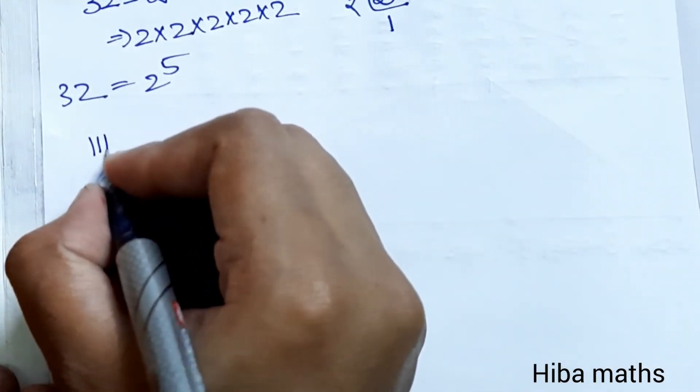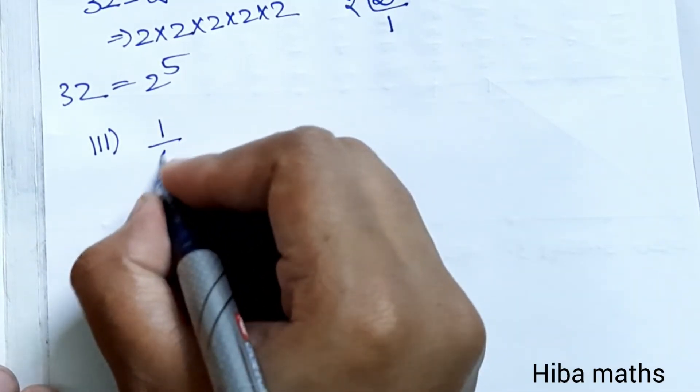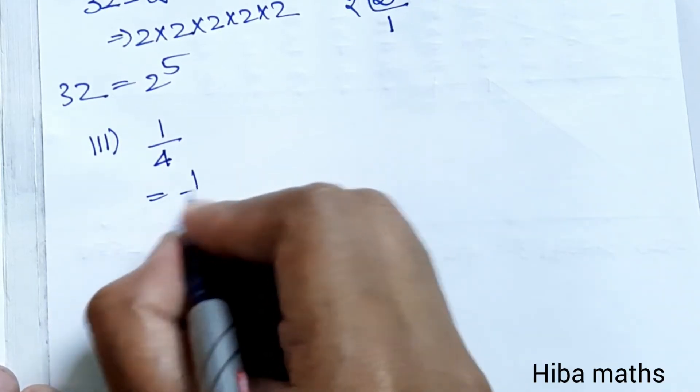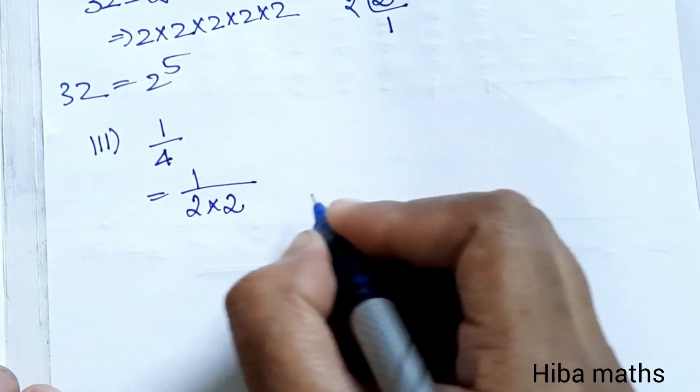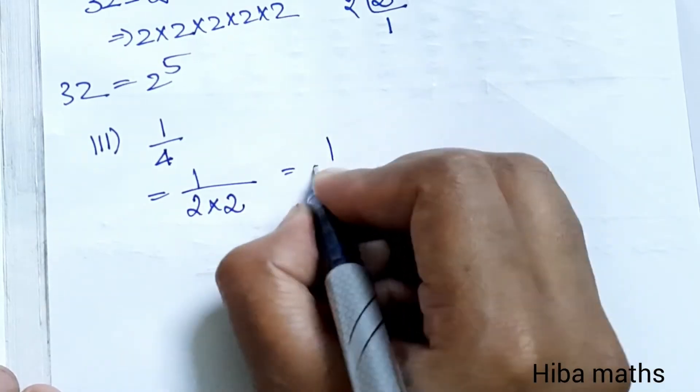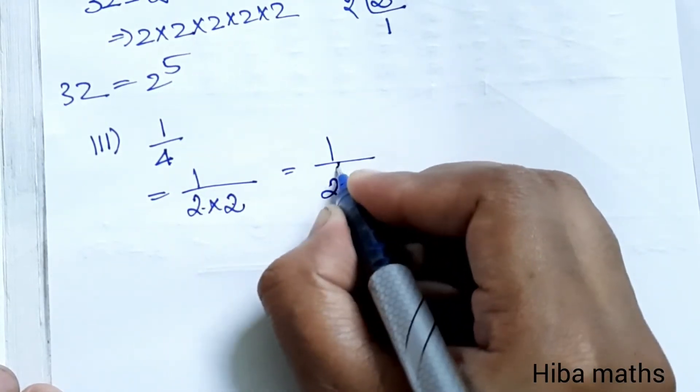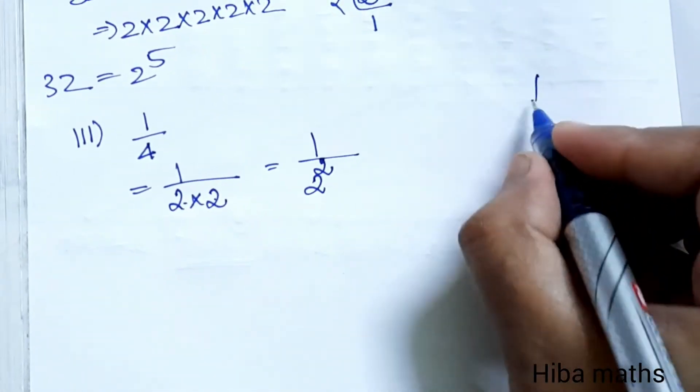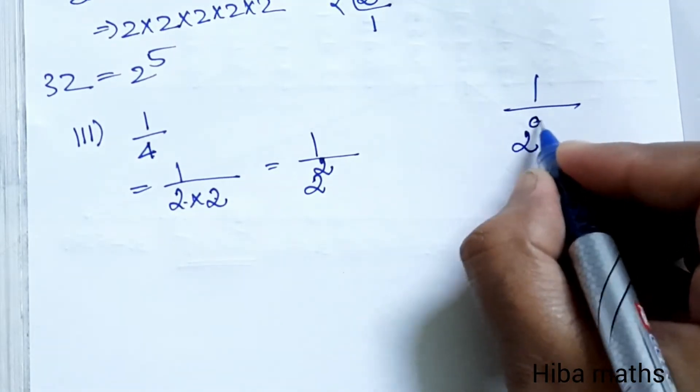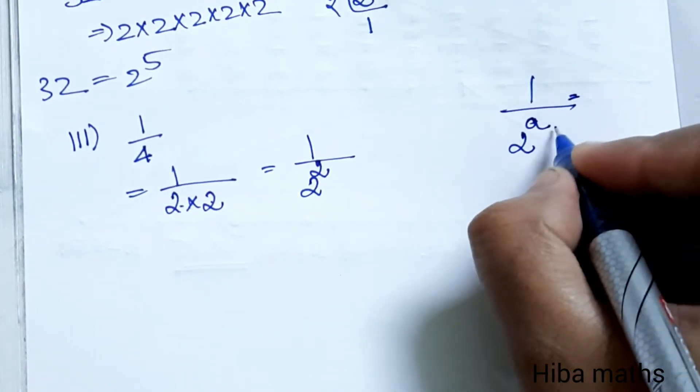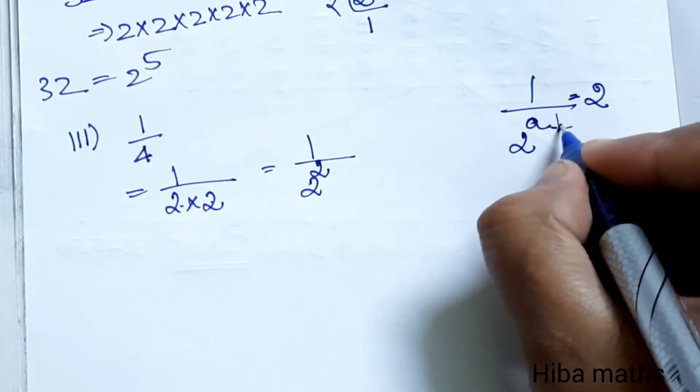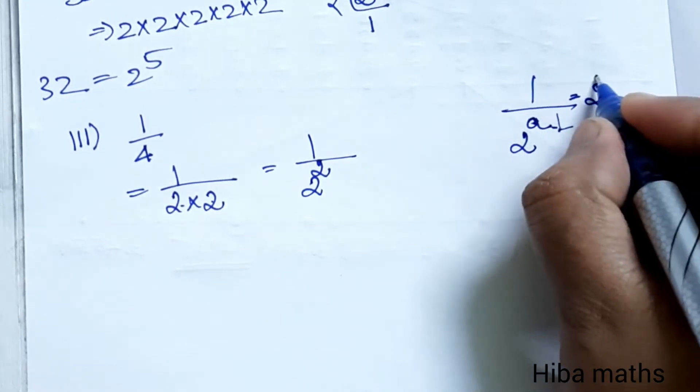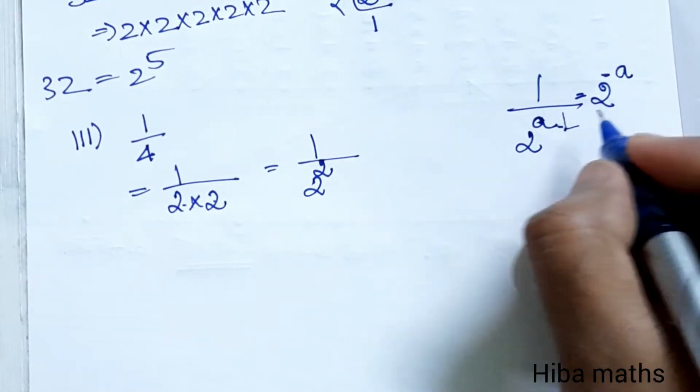Third question: 1/4. This is easy. 2 times 2 equals 4, so 1/4 = 1/(2^2) = 2^(-2). When you have a number in the denominator, the exponent becomes negative.